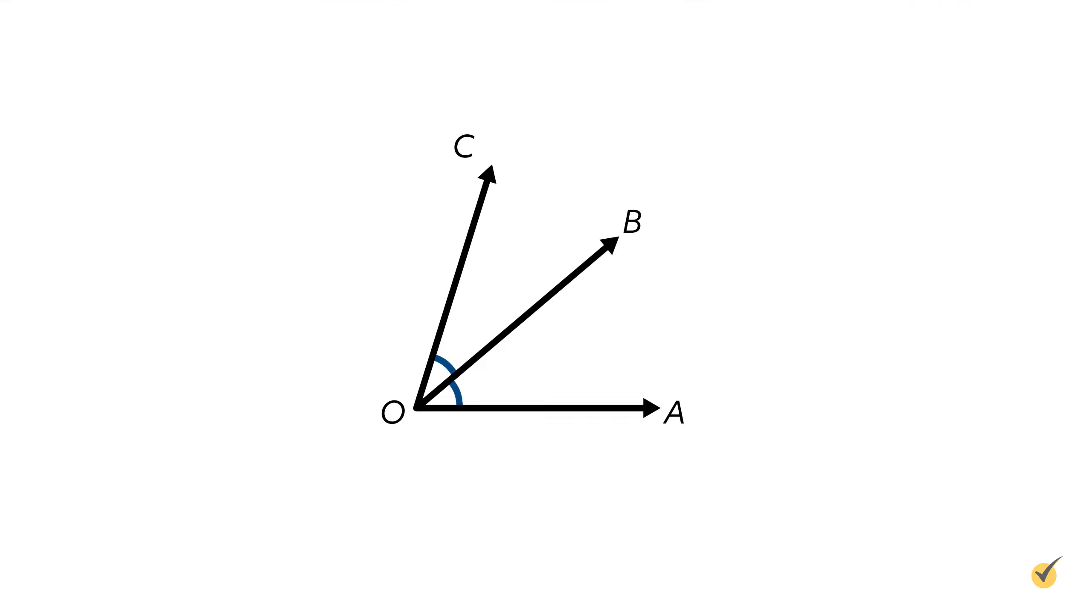Formally, two requirements must be met for two angles to be considered adjacent. First, the angles must share the same vertex or corner point. Here, O is that shared vertex.